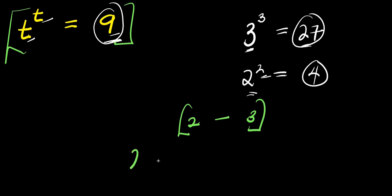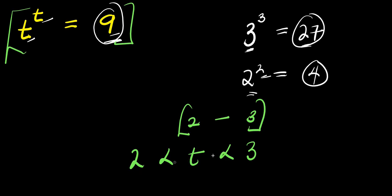We can say that 2 is less than t and t is less than 3, meaning t starts from 2-point-something — because t is greater than 2, maybe 2.1 or so — and stops at maybe 2.9 or 2.99, because that is obviously less than 3. So to find that particular value, we need to solve this exponential problem.